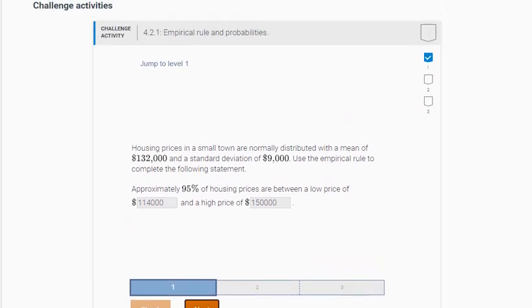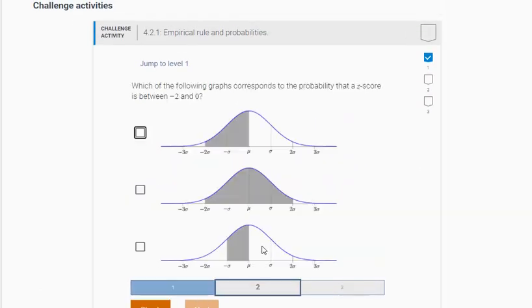Let's go to the second one now. So which of the following graphs correspond to the probability that a Z score is between negative two and zero? So you'll notice you'll see these Greek letters here. This is mu, this stands for the mean, and sigma stands for the standard deviation.